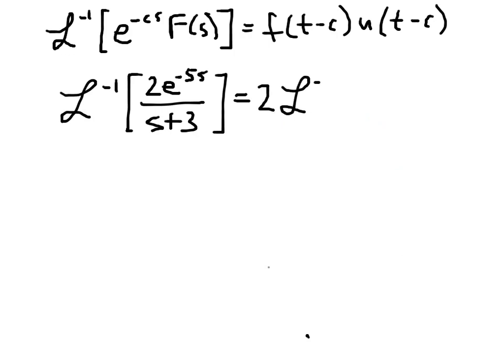So I've got 2 times the inverse transform, and I take the e to the minus 5s off the top of the fraction, and we get 1 over s plus 3. So we can see that c is going to have the value 5 in this case. So what do we want to do next?